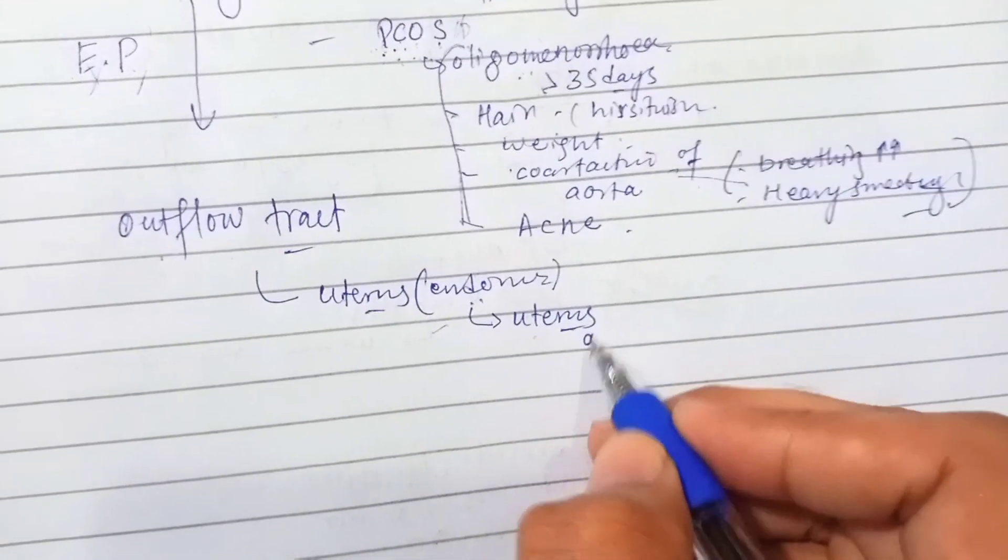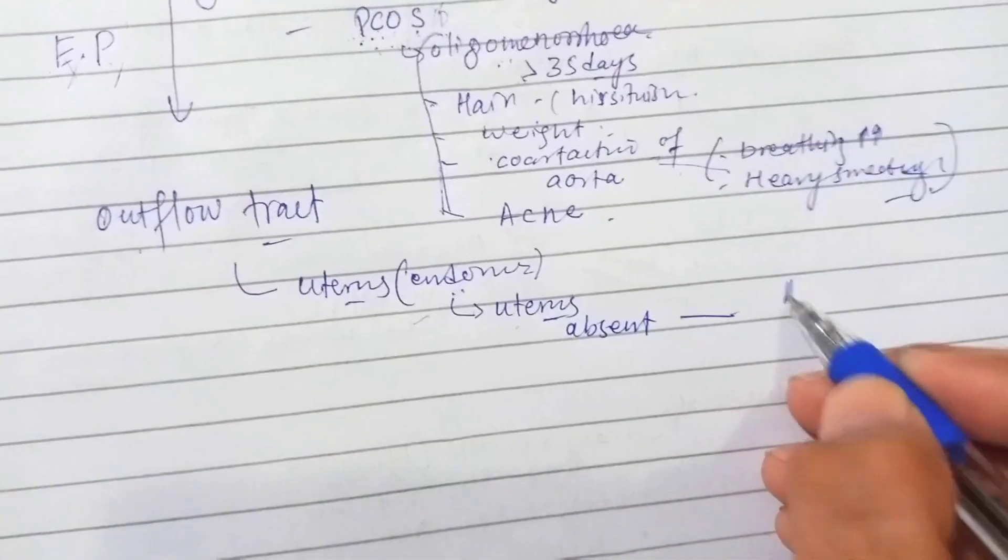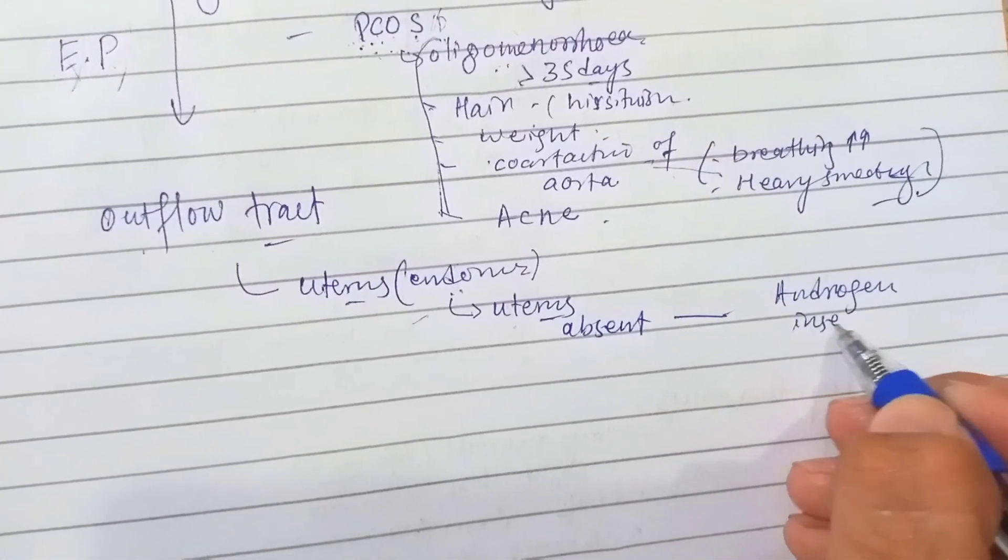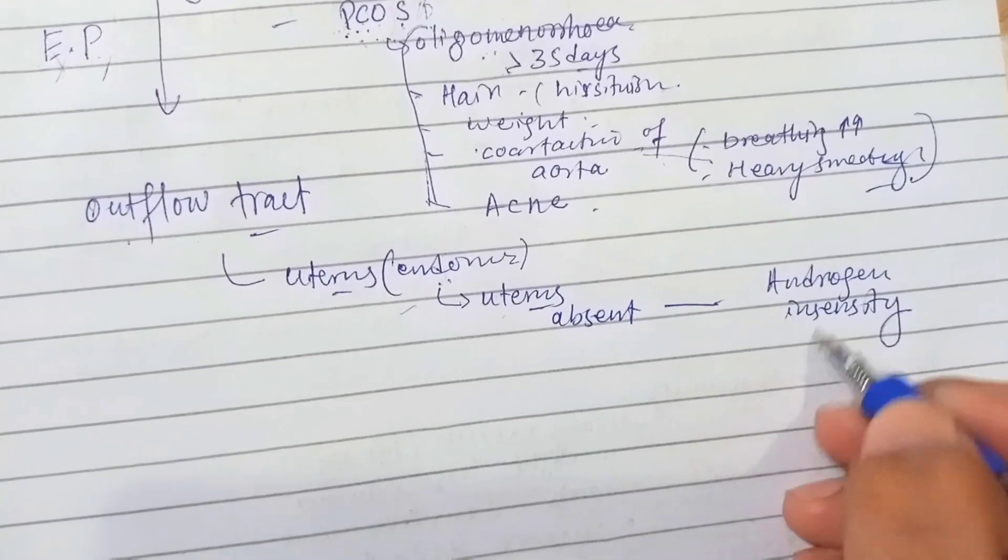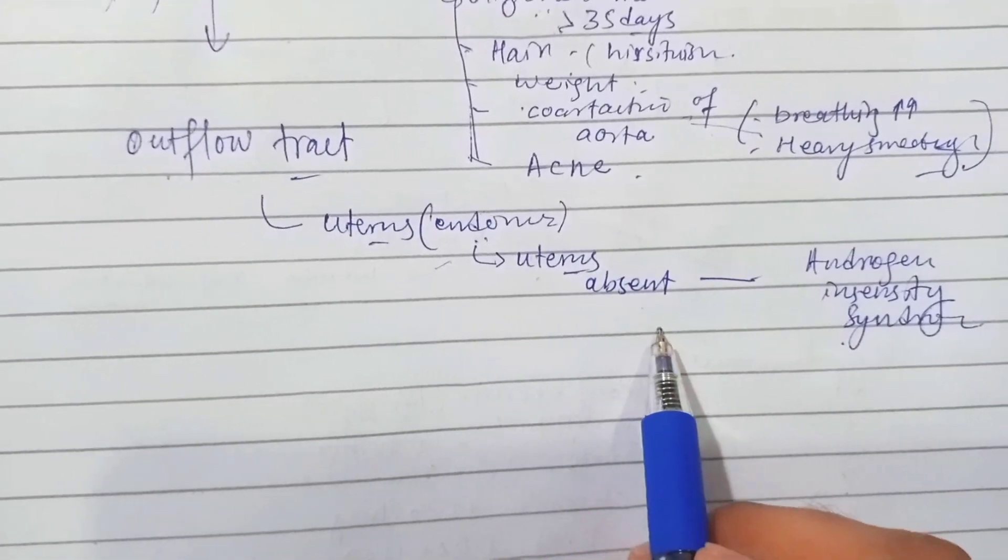Is there absent uterus? For example, in case of androgen insensitivity syndrome, the uterus is absent, so there is no menstruation.